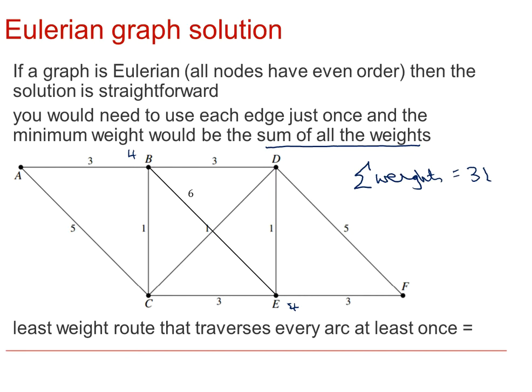And that gives us the least weight route that traverses each arc at least once, being 31. Because we know that whichever node we start from, we can end up back at that node and only travel each of those arcs once because the graph is Eulerian. One possible route would be from A to B to D to F to E back to D again to C to B to E to C to A. So you can see we can revisit the nodes but we only go down each arc once.